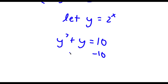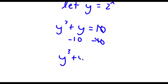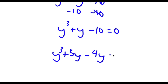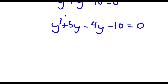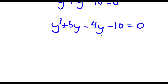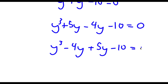If I subtract 10 on both sides I get y cubed plus y minus 10 equals 0. I'm going to rewrite y as 5y minus 4y, giving y cubed minus 4y plus 5y minus 10 equals 0. So now it's going to be much easier to factor this out.